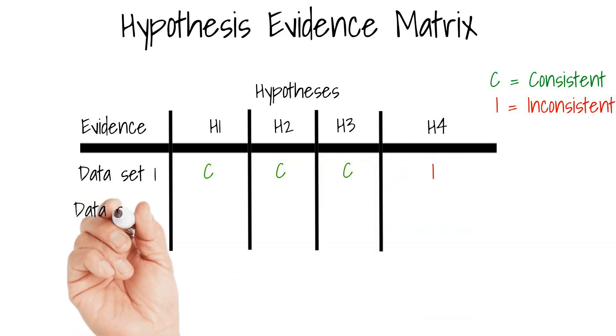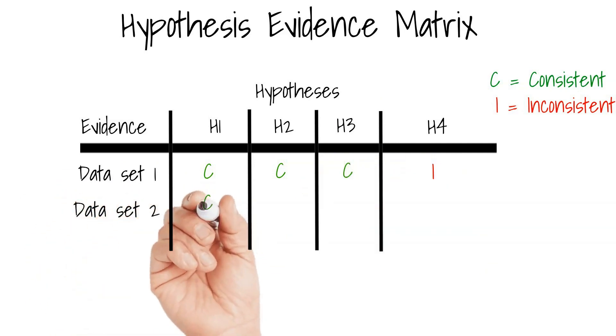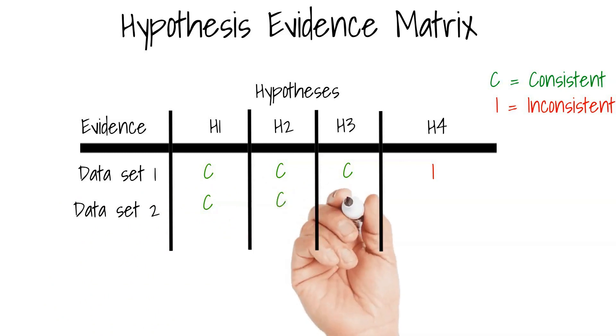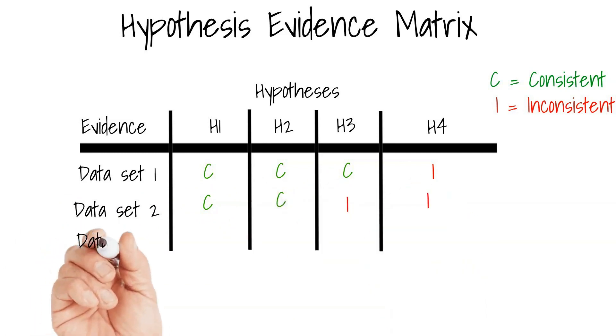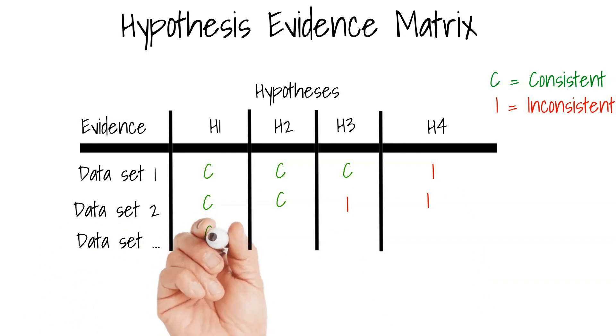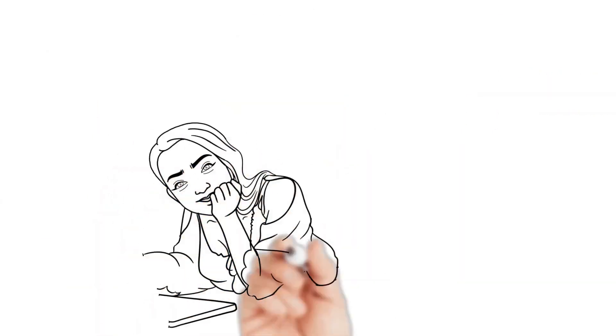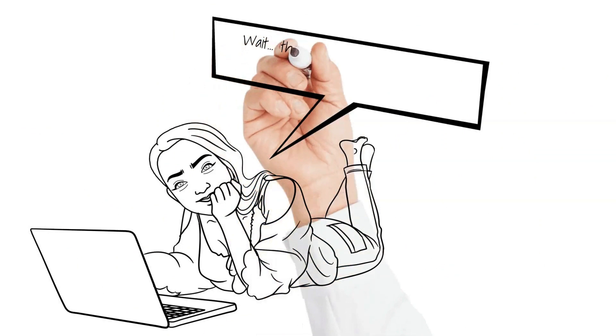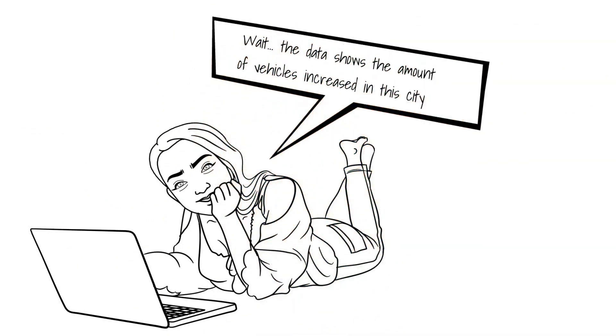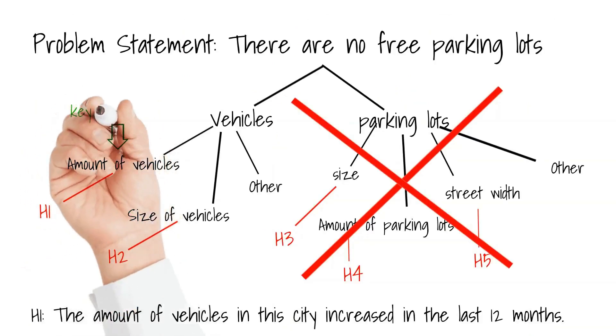Based on this matrix we want to find the hypothesis which is the least inconsistent with all the evidence. Every single time we gather new evidence, we will enter a new row and compare if any hypothesis is inconsistent with this evidence. When our evidence shows that the identified root cause has an immense effect, we made huge progress in our root cause analysis. Let's assume we found data that shows that in the last 12 months many new vehicles were registered in the city.